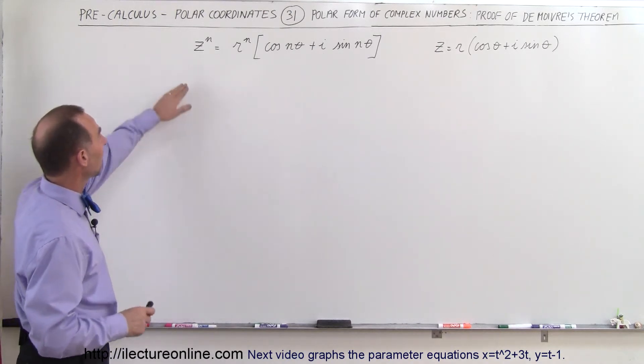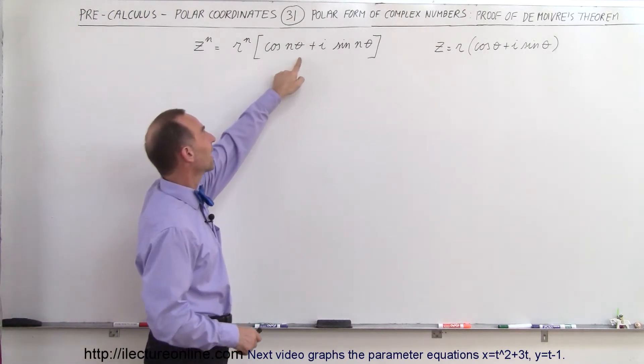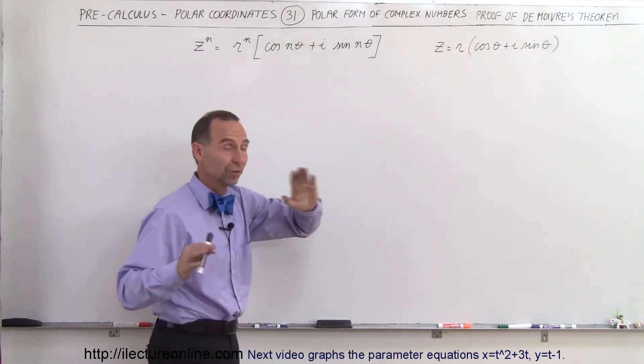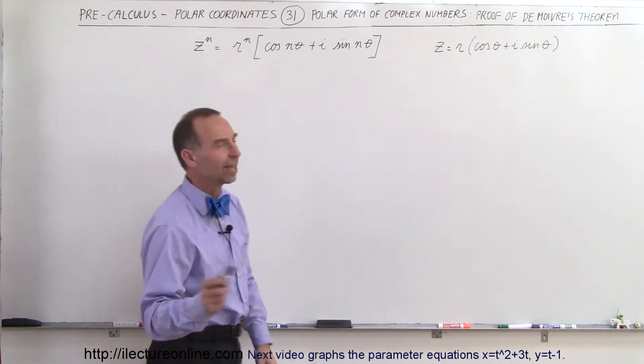Here we have z to the n equals r to the n times cosine of n theta plus i times sine of n theta. We assume that the polar form is z equals r times cosine of theta plus i times sine of theta.